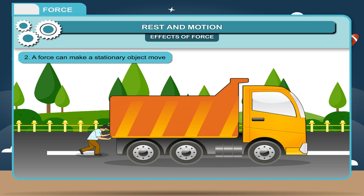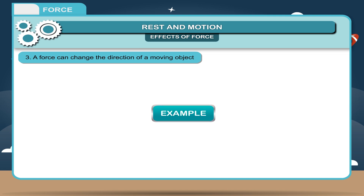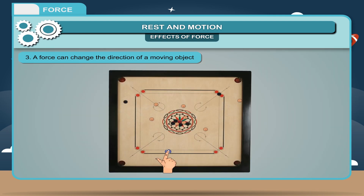These objects remain stationary because the force applied by us is not sufficient to move the body. A force can change the direction of a moving object. For example, a batsman changes the direction of a moving ball by tilting the cricket bat. You can change the direction of a carom coin when you hit it at an angle with a striker.